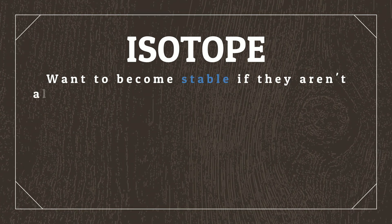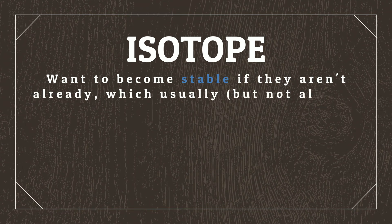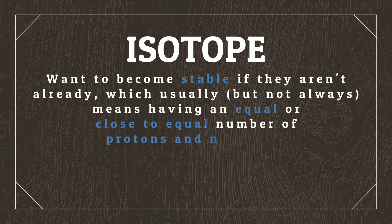These numbers — 8 through 22 — are the combined number of protons and neutrons and determine the atom's mass. Carbon is number 6 on the periodic table, meaning we know it has 6 protons. So as long as the element is still carbon, we know it must have 6 protons; however, the number of neutrons can vary, making up the remainder of the number present in the isotope. Isotopes want to become stable if they aren't already, which usually means having an equal or close to equal number of protons and neutrons.